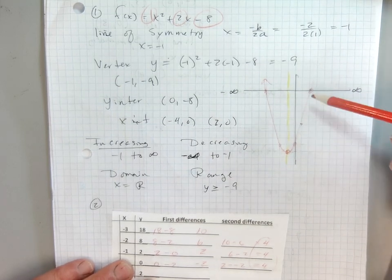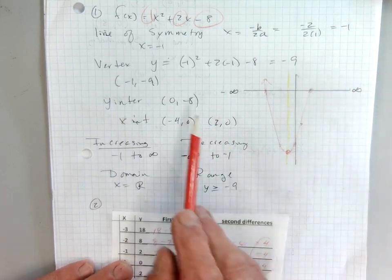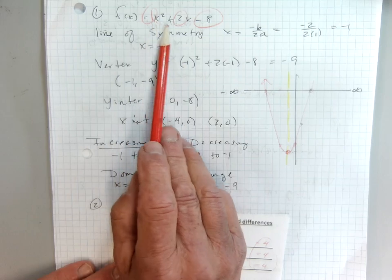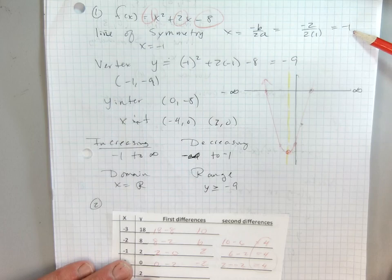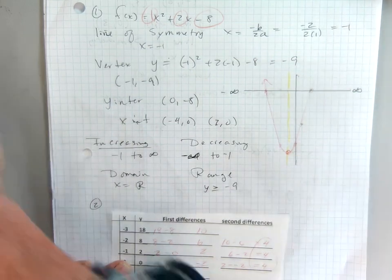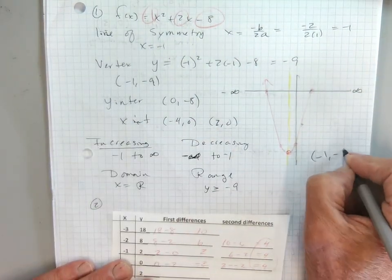Somewhere along that line of symmetry is the vertex, so I plug negative 1 into my equation for x and I evaluated it for x and I got negative 9. So I plugged it in, I got negative 9, so my vertex is at the point negative 1, negative 9.